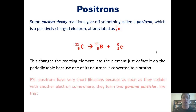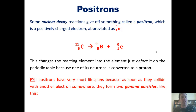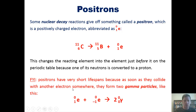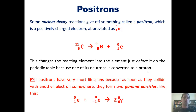One more important note: positrons have very short lifespans because as soon as they collide with another electron anywhere, they form two gamma particles. Mathematically: 1 plus negative 1 equals 0, and 0 plus 0 equals 0, yielding two molar equivalents of gamma particles. In reality, exposure to gamma radiation won't turn you into a green monster — it will just kill you.